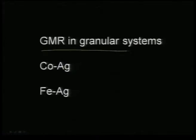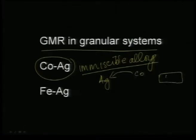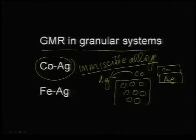GMR can also be seen in granular systems. For example, if you take cobalt and silver — these two are immiscible — if you deposit a silver layer and try to put a cobalt layer, it would not grow as a two-dimensional cobalt layer. Because of the immiscibility, all the cobalt will form clusters of cobalt atoms deposited on the silver matrix. The interaction between these clusters determines what sort of magnetoresistance you get, and this is called a granular system.